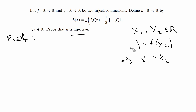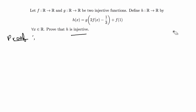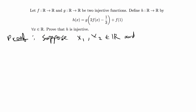We're going to use this definition to prove that h of x is injective. So let's start the proof. We begin with: suppose we have some x1 and x2 that belong to the reals, and let's say that h of x1 is equal to h of x2.